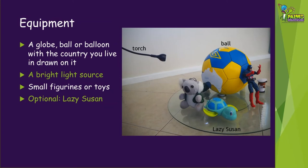To demonstrate night and day you will need the following equipment: a globe, ball or balloon with your country of origin marked on it, a small bright light source like a torch, some toys or figures to represent other countries around the world, and if you have a lazy Susan that will also help you.